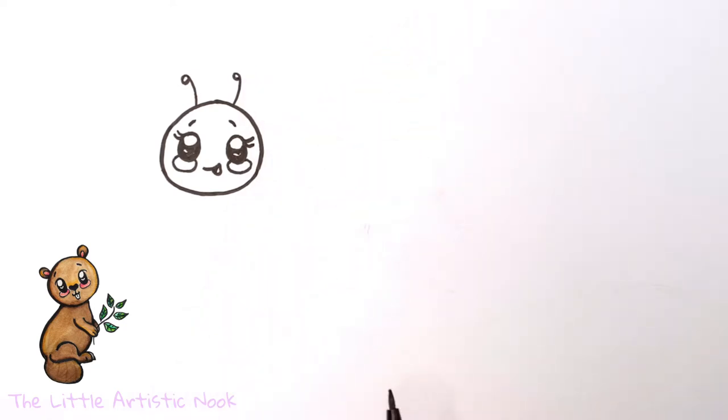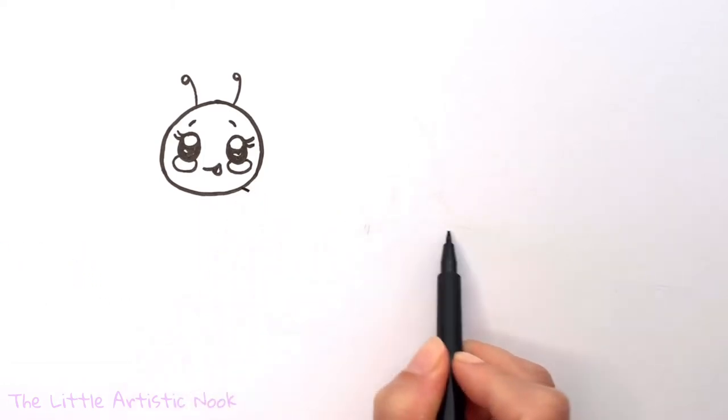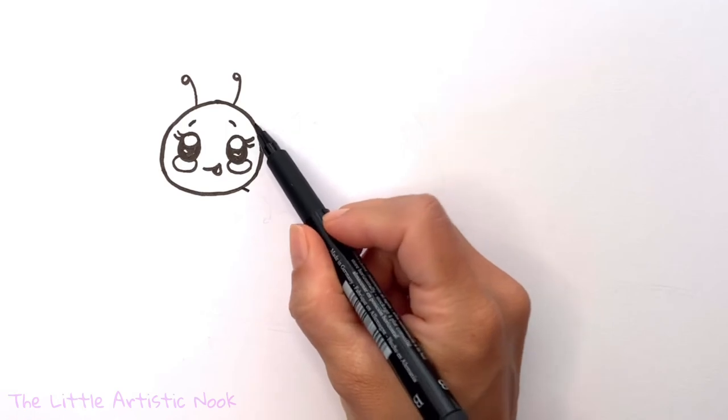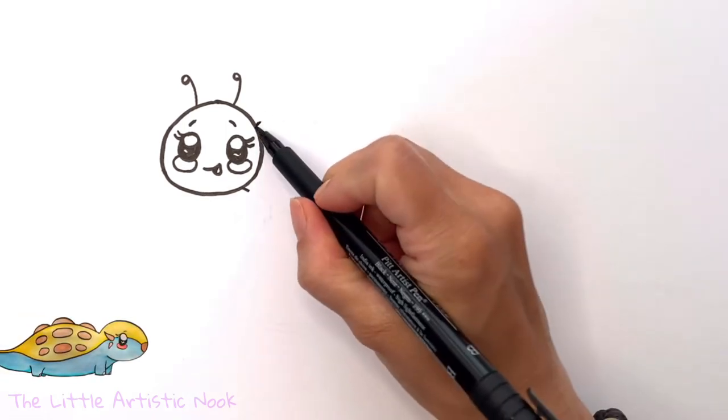To start preparing to draw her body, I'm going to give myself some guidelines. First drawing one sort of towards the right side of my page underneath that cheek and one coming up towards the top above the eye.